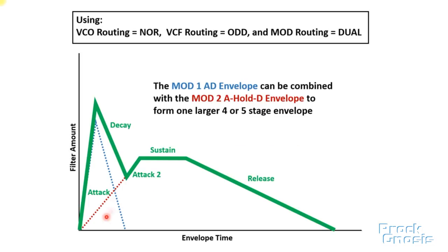Another configuration gives us a five-stage envelope, slightly different — with an attack, a decay, a second attack, a sustain, and then a release in its final stage. An important point to remember is that the stages of analog envelopes rarely behave in a linear way. They usually exhibit exponential or logarithmic behavior, meaning the different stages are frequently not a straight line.